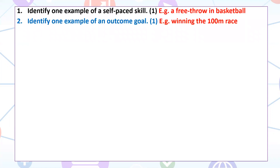One example of an outcome goal — just a standard example. Anything where you're saying you're winning the event — that's the crucial thing. If you're aiming to win the event, that's an outcome goal regardless of your performance in the actual completion of that event. Your aim is to win it.